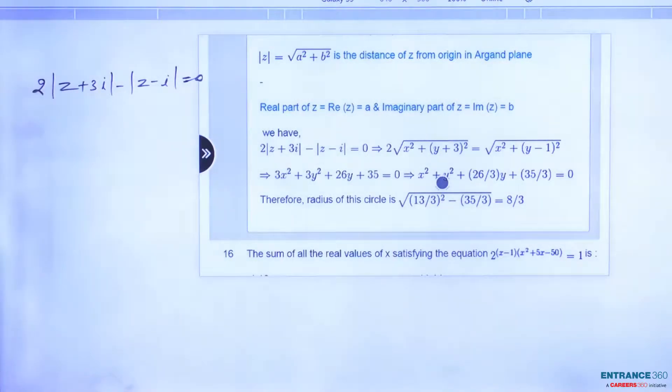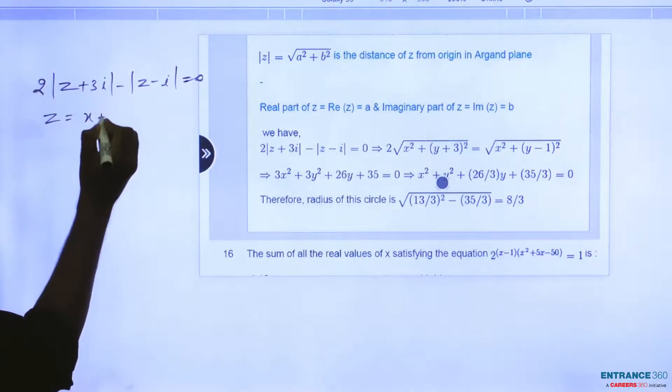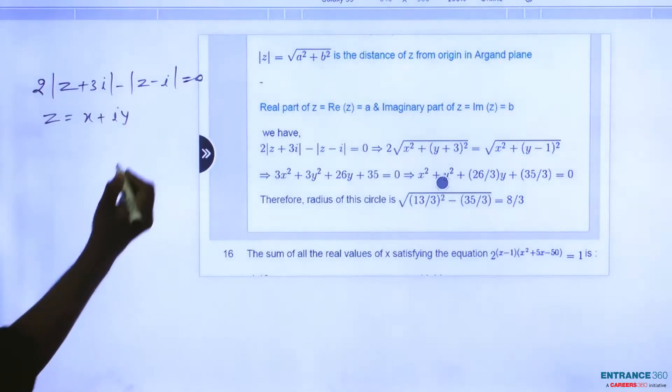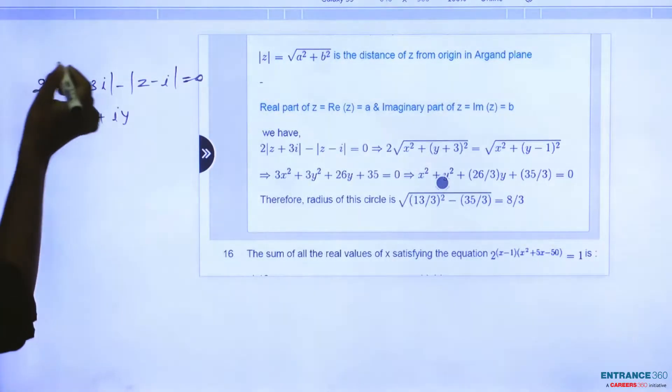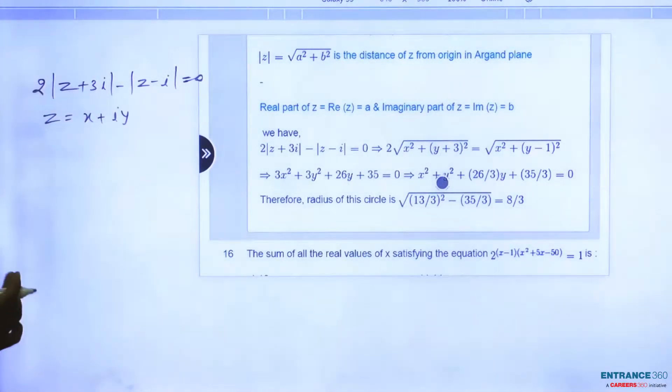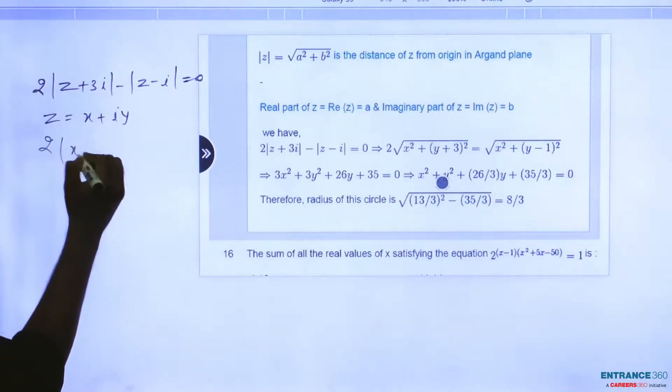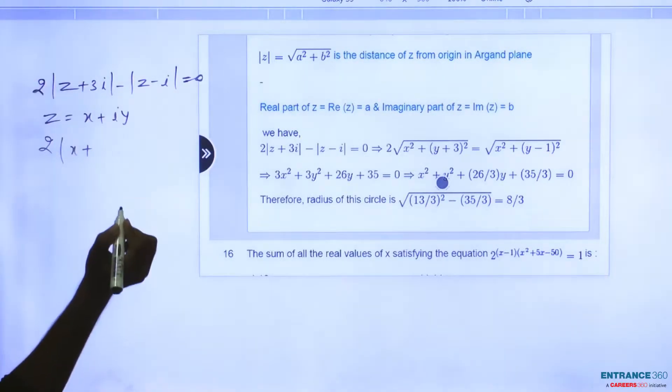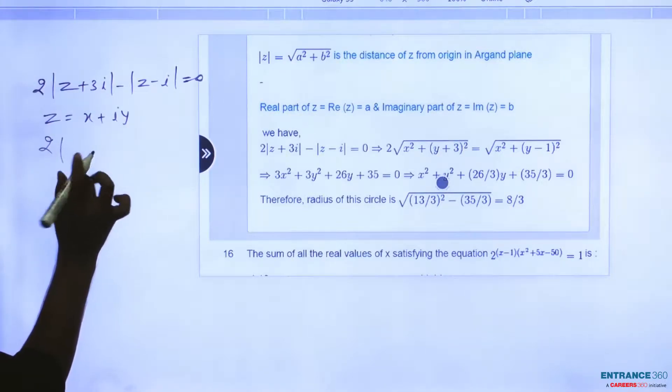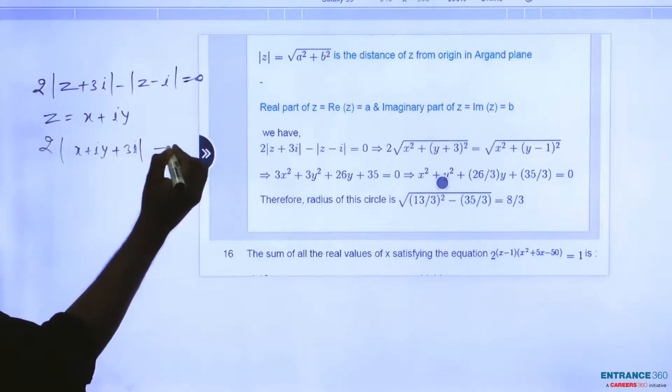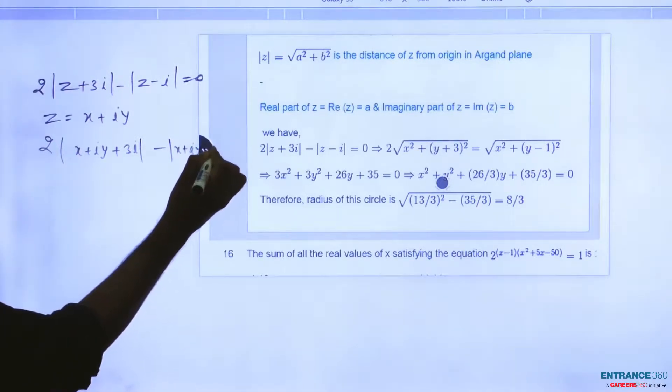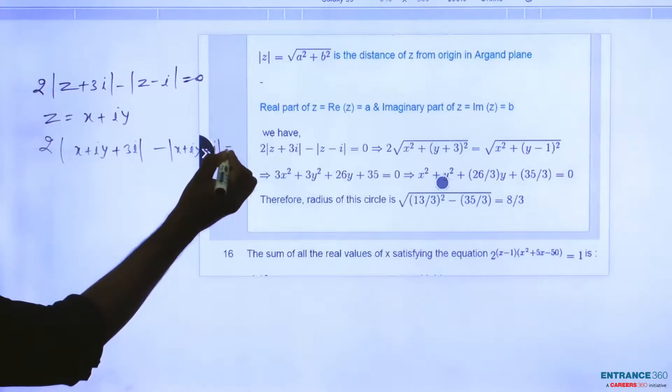As we know that, if any complex number we are taking means z, then you can take z equal to x plus iy. You have to take first the complex number z equal to x plus iy in terms of x and y. Then you will replace the value of z in terms of x and y.